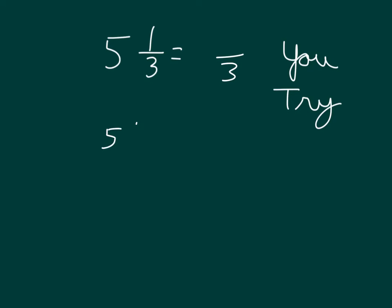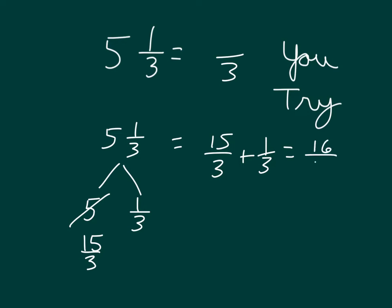Did you decompose it? Breaking it apart into its ones and into its fractional parts? And then figuring out how many thirds that that 5 is worth? What would you end up doing with the 15 thirds and 1 third at that point? Right! You would end up adding them to be able to get 16 thirds. Check over your answer.